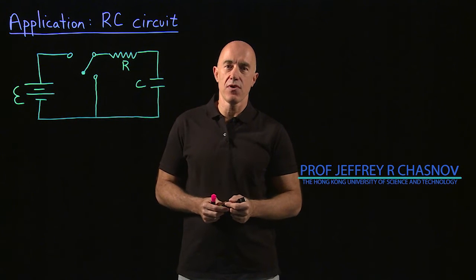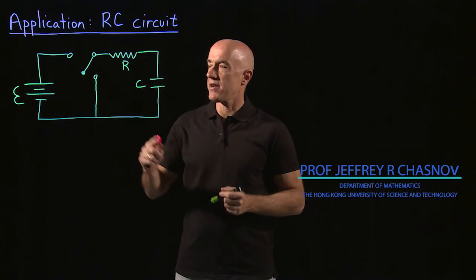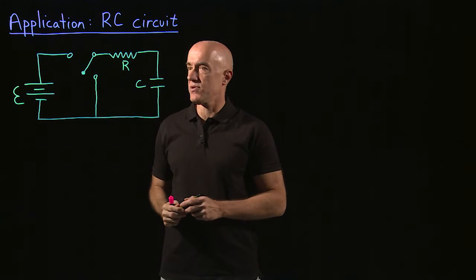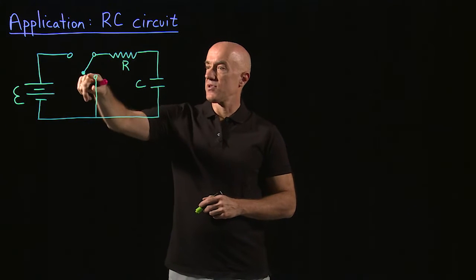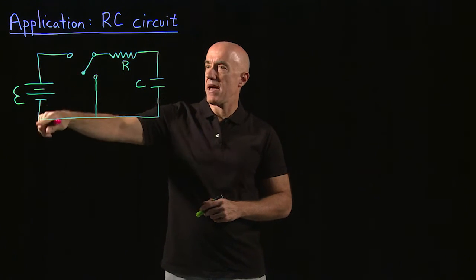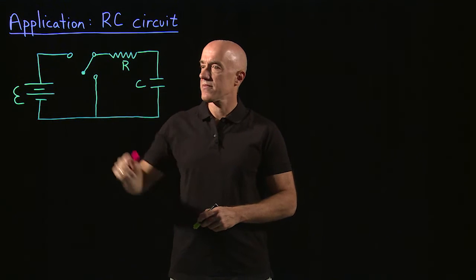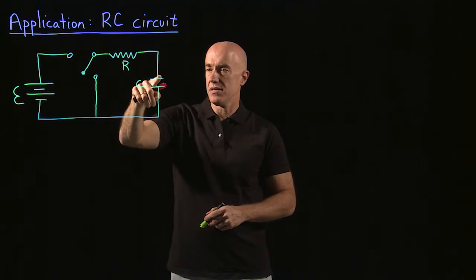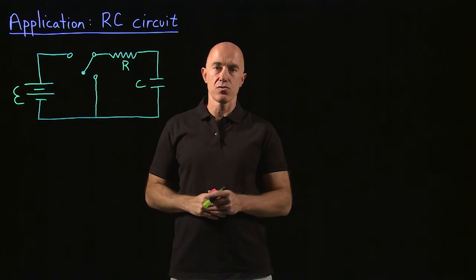Here is a nice application for prospective electrical engineers. This is a circuit diagram. We have a DC voltage connected to the circuit, a resistor, and a capacitor. If this switch connects the battery, the battery will cause a current to flow in the circuit and charge up the capacitor. Then if we flip the switch to cut the battery out of the circuit, the capacitor will discharge, causing a current to flow through the resistor, and then go back to no charge on the capacitor.